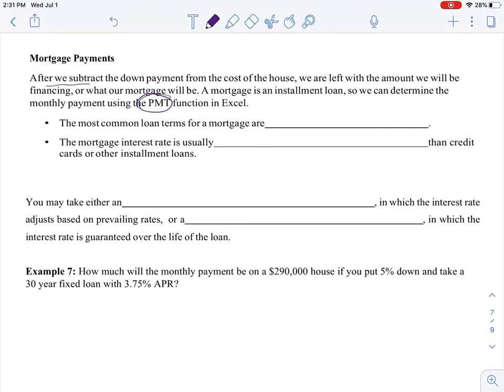After we subtract the down payment from the cost of the house, we are left with how much we finance, and that's how we can figure out how much we can afford every month. The most common loan terms for a mortgage are between either 15 years or a 30-year loan. The mortgage interest rate is usually lower than credit cards or other installment loans.